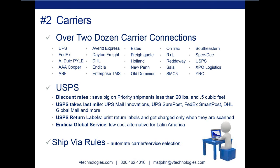New features with carriers: we now have over two dozen carrier connections or modules. We recently added A-Duie Pyle, Averitt Express, and Holland. With a carrier connection or module, your shippers gain the ability to electronically rate shop or use any other electronic feature the carrier may offer, such as electronic tendering. You no longer have to call the carrier or go to their website to find out how much your shipment will cost, or to let the carrier know you have a shipment ready to be picked up.